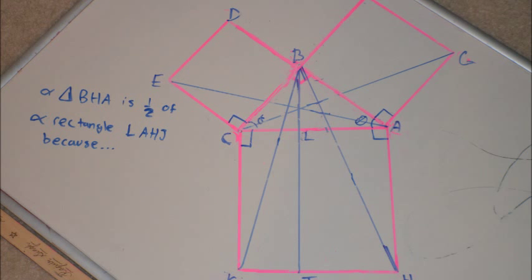Now we have to prove triangle GCA is one half the area of square BFGA. The base of triangle GCA is CA, which is also a side of square BFGA. The height of triangle GCA is BA, which is another side of square BFGA. Thus the area of the square is GA times BA, while the area of triangle GCA is GA times BA times one half.